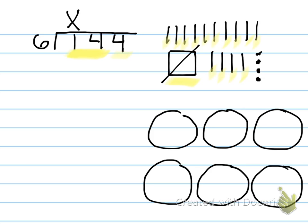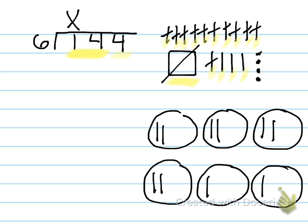So think — there are 6 groups and we have 14 tens. 14 divided by 6. Let's distribute them and find out. So we cross them out and put them in each circle. Each group gets 2 tens, and then over on your long division, 14 divided by 6 is 2 — because we have 2 tens in each circle.